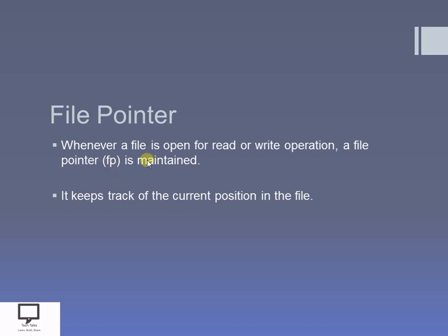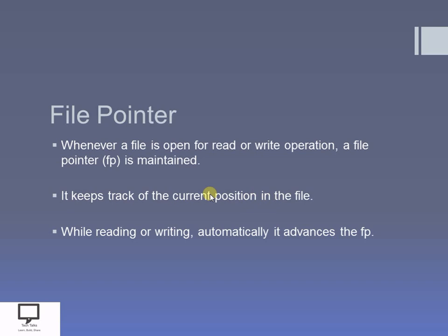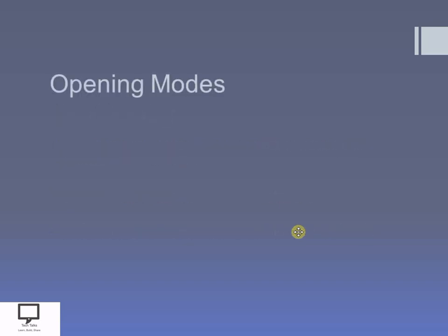The file pointer keeps track of the current position of the cursor in the file, so it is very helpful. Whenever you want to perform a reading or writing operation, the programmer does not need to take care of the advancement of the file pointer, because automatically the file pointer is incremented to the next position in the file. With the help of this file pointer, we can open a file in these different opening modes.